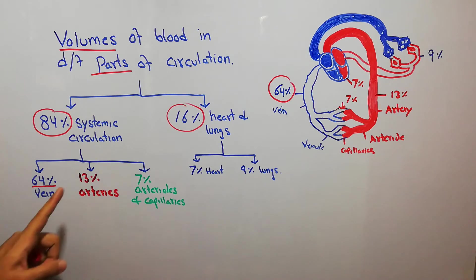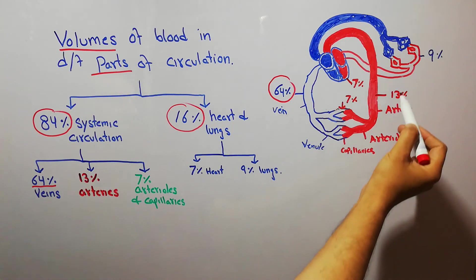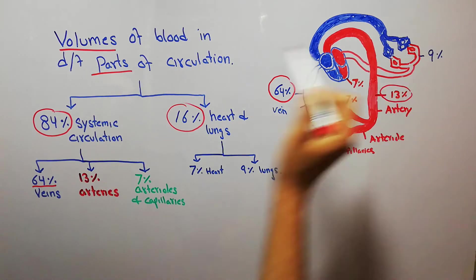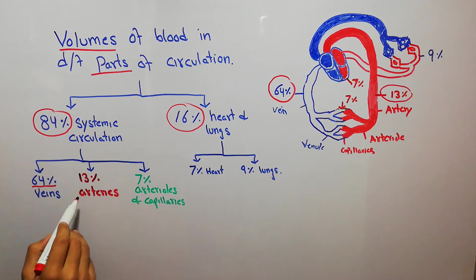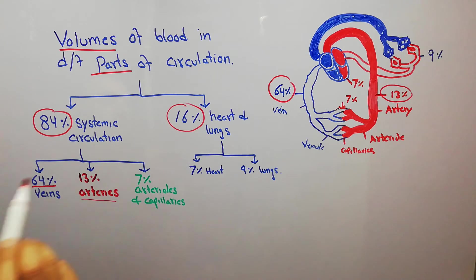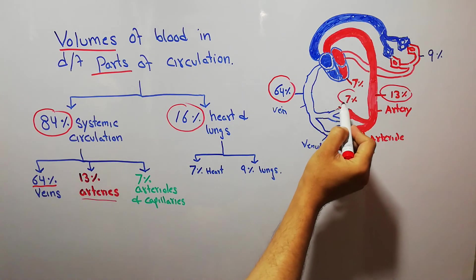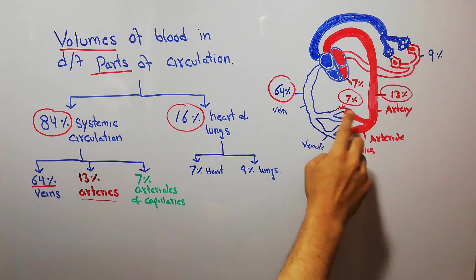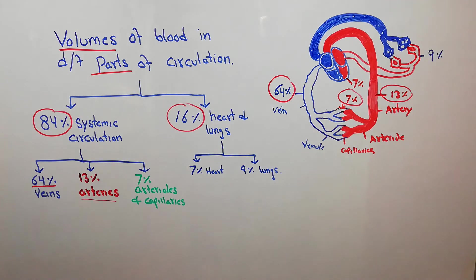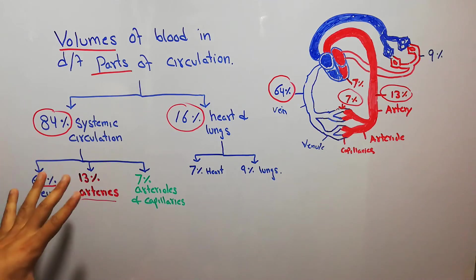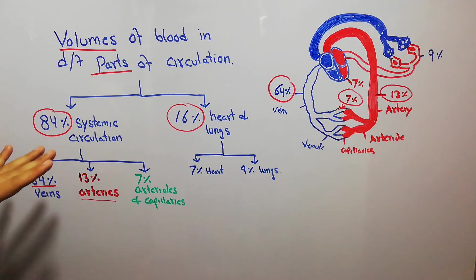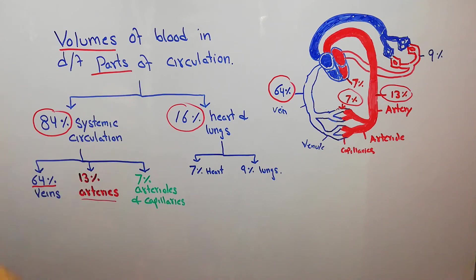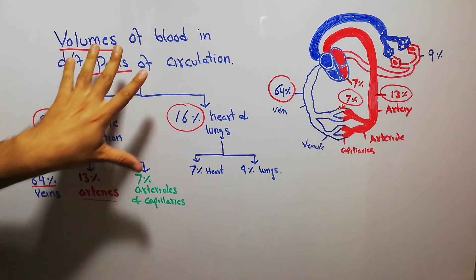13% of the blood is present in the arteries, shown in red color to indicate that it is oxygenated blood. Then 7% of the blood is present in the arterioles and capillaries, which together contain about 7% of the blood present in the systemic circulation.